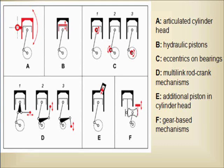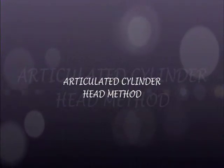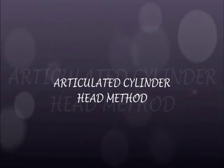The methods to vary compression ratio include: using an articulated cylinder head, using a hydraulic piston, using eccentrics on the bearing, using multi-rod crank mechanics, having an additional piston in the cylinder head, and gear-based mechanisms. We will first look at the articulated cylinder head method.